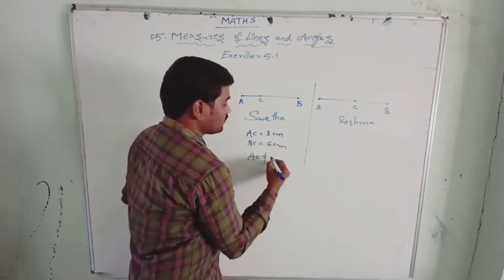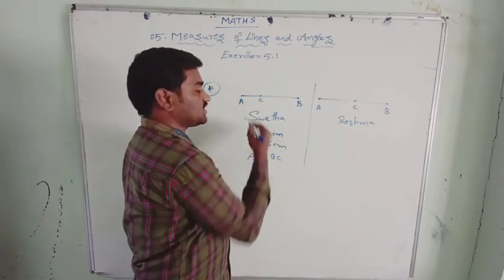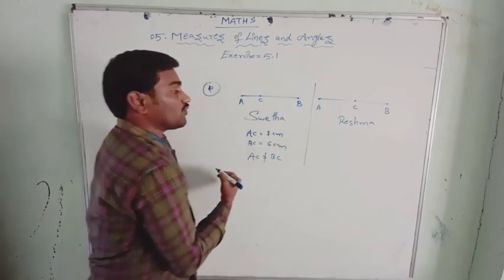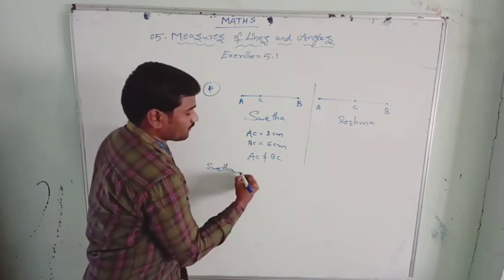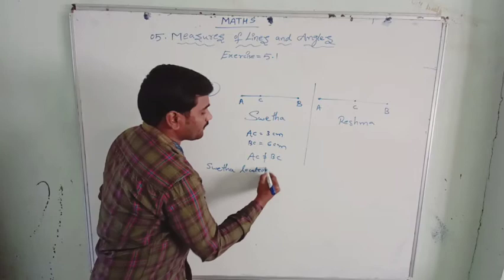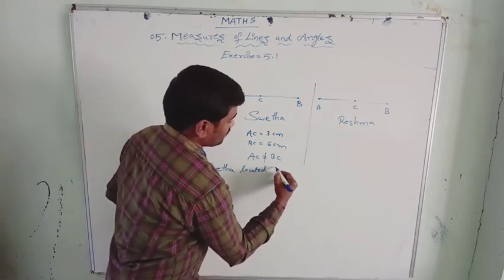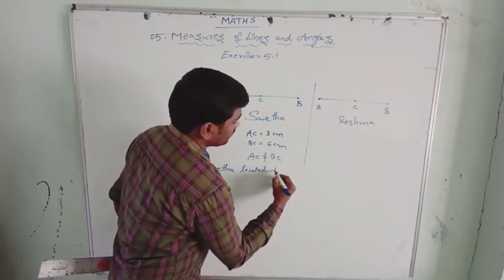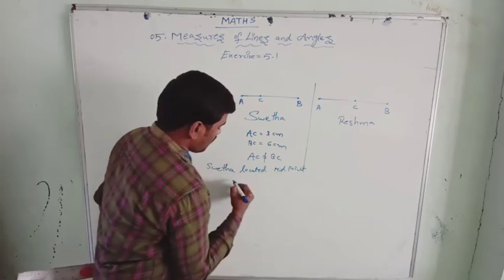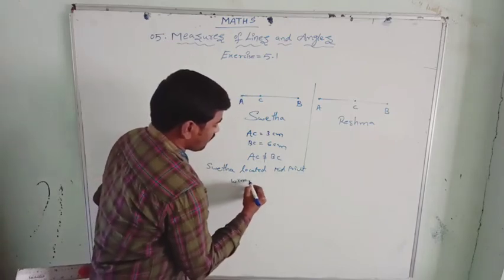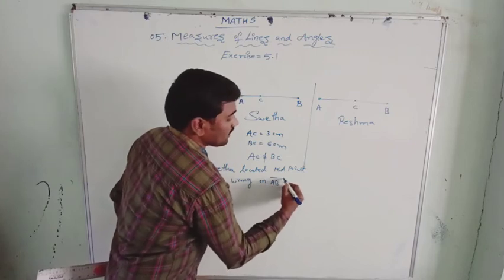Here, AC is not equal to BC. That means, here, C is not a midpoint. Svetha located wrong. Svetha located wrong midpoint on AB line segment.